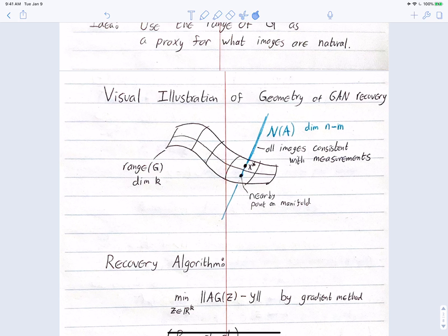There is some point x* that was imaged, and measurements A x* were taken. Since m < n, there's a null space to the measurement operator — shown as a blue line — so all points along this line are consistent with the measurements, but only one of them intersects the manifold. Our goal is to have exactly one intersection of the set of consistent points with the natural signal manifold.